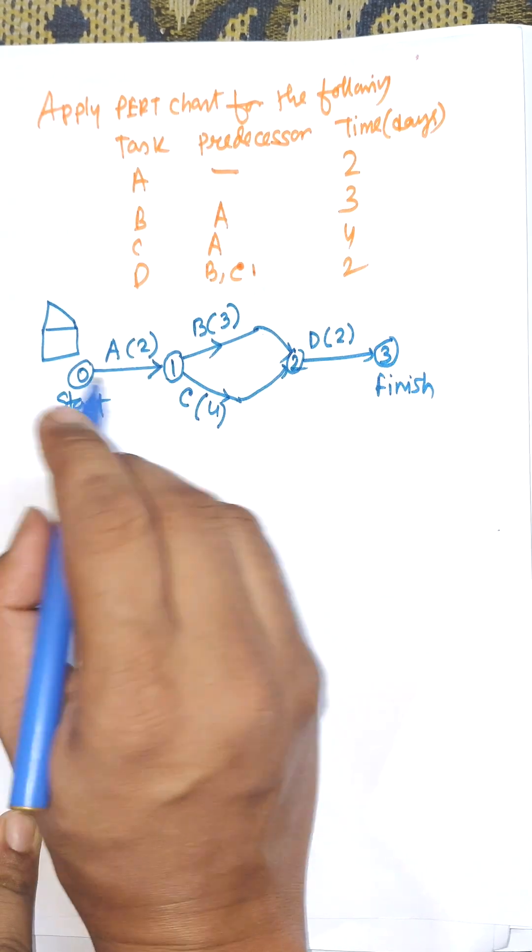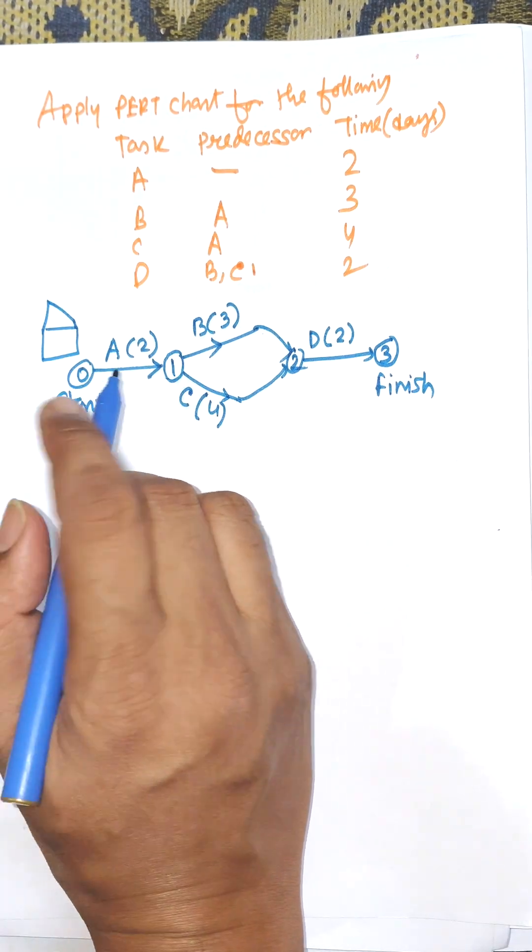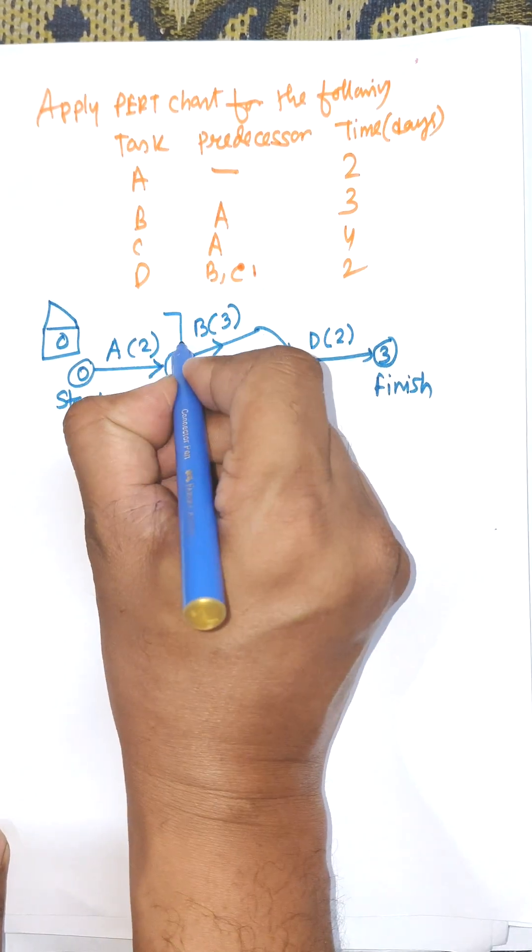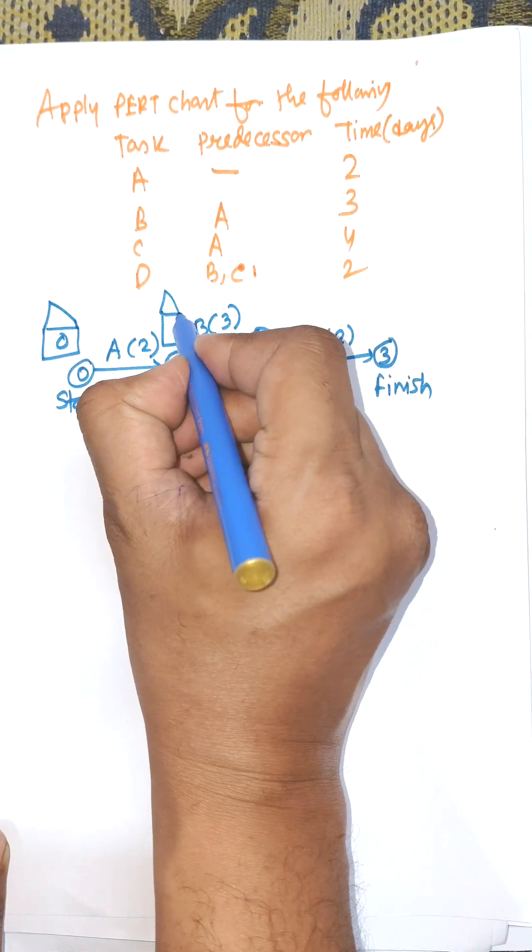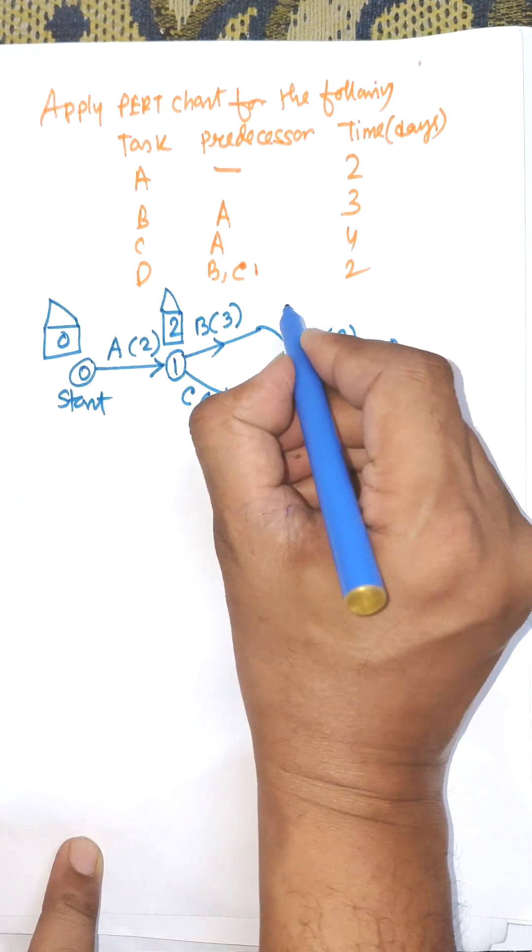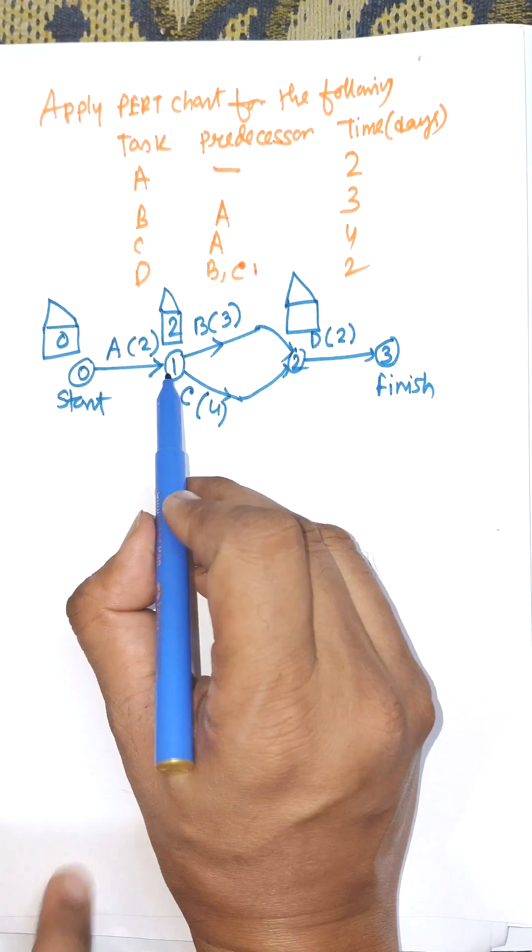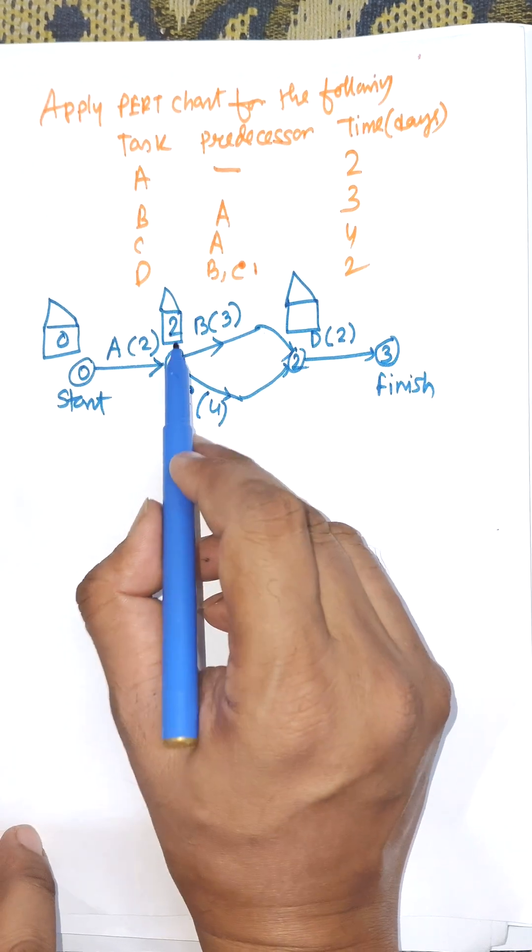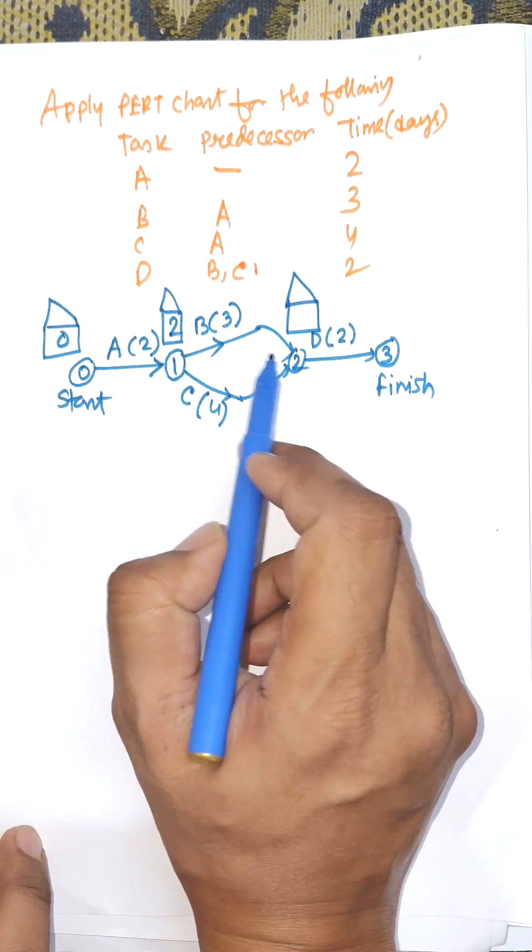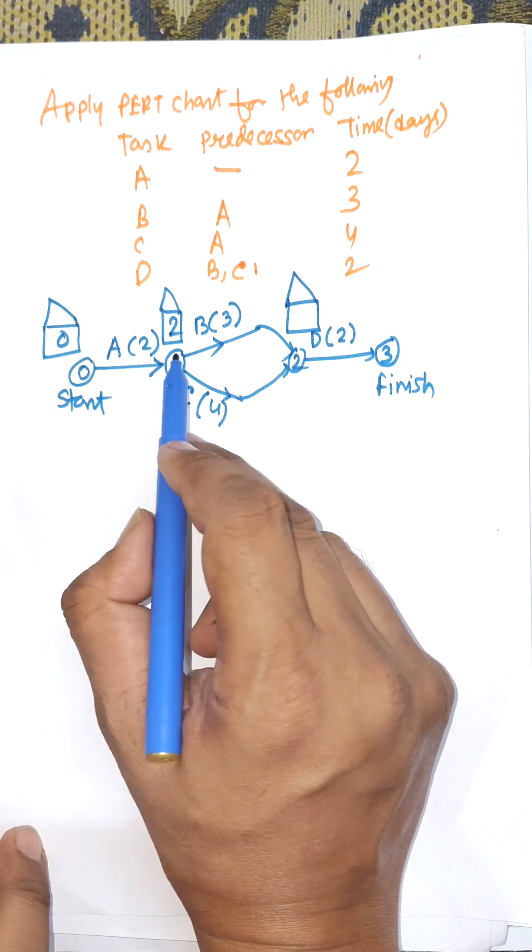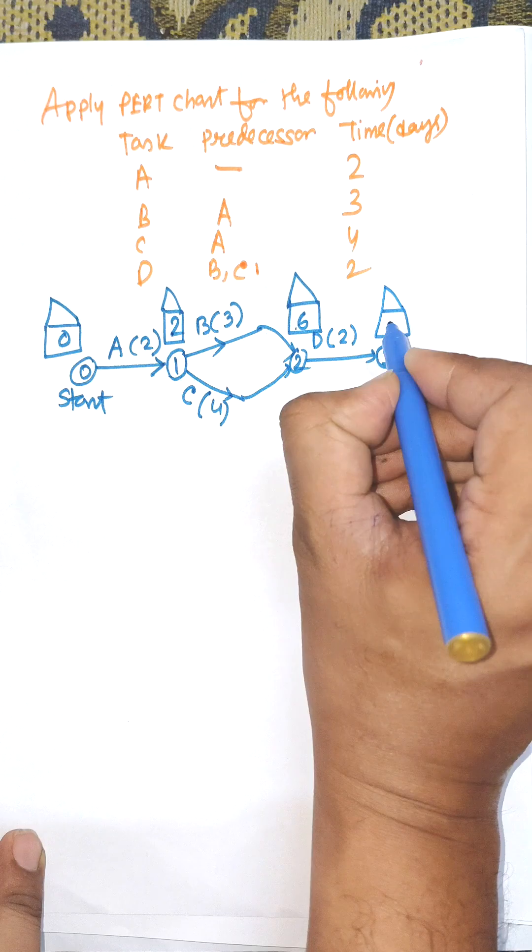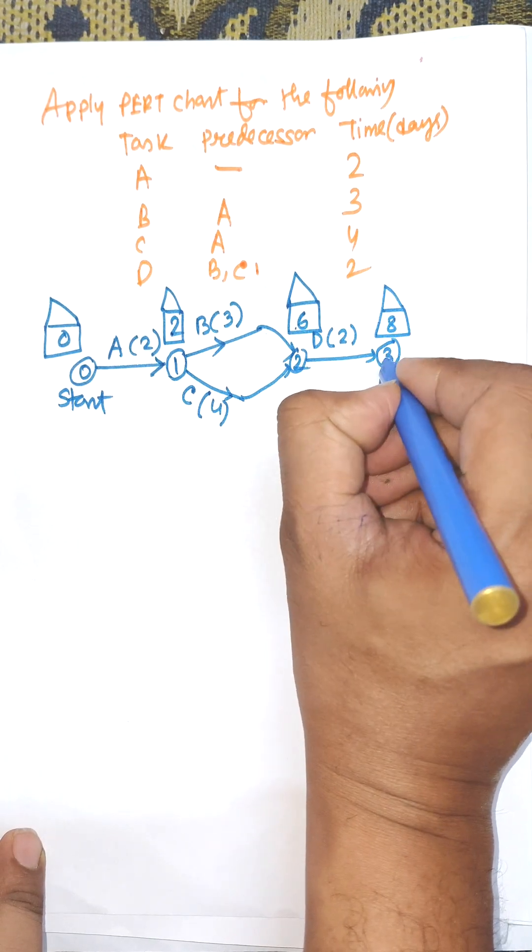We need to calculate earliest time calculation and latest time calculation. For A is 0 and for C is, for 1 is 0 plus 2 is 2. Here for the earliest time for the node 2 is, here 2 plus 3 equal to 5 and 2 plus 4 equal to 6. Maximum of them, 2 plus 3 is 5 and maximum of 2 plus 4 is 6, so it is 6. Now 6 plus 2 is 8 and this is the finish state.